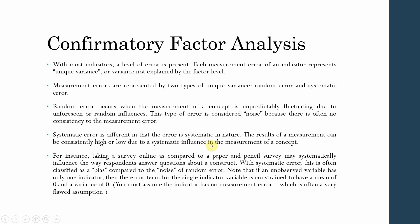Systematic error is different in that the error is systematic in nature — the results of a measurement can be consistently high or low due to systematic influence. For example, taking a survey online compared to a paper-and-pencil survey may systematically influence how respondents answer questions. Systematic error is classified as bias, compared to the noise of random error. Note that if an unobserved variable has only one indicator, the error term is constrained to a mean of 0 and variance of 0 — a very flawed assumption — which is why you need multiple items.